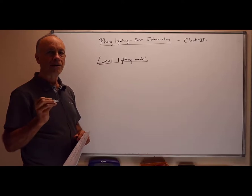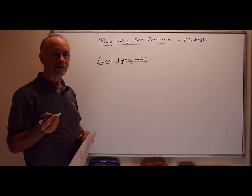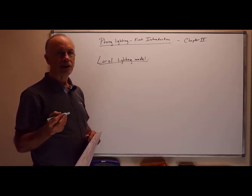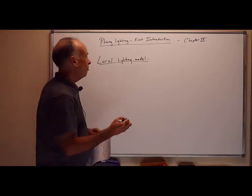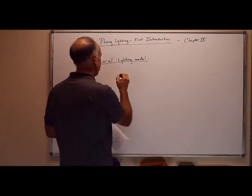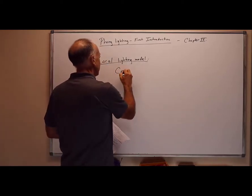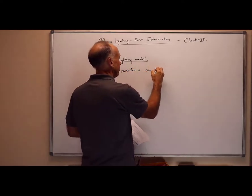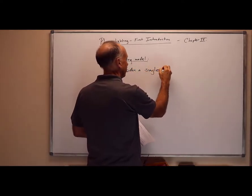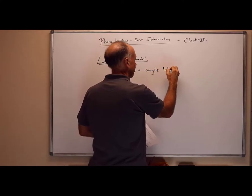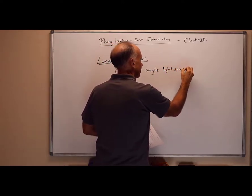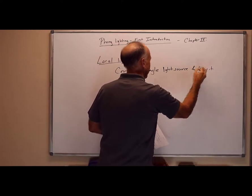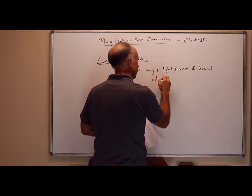We don't worry about things like shadows, or multiple reflections, or mirror images, etc. So what we do is we consider a single light source at a time. We could do multiple light sources, but we only look at one at a time, and how it illuminates a point on a surface.